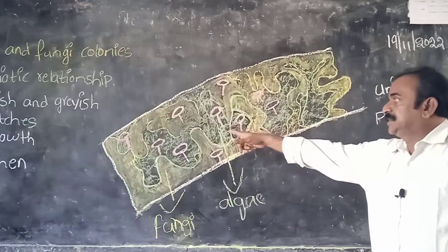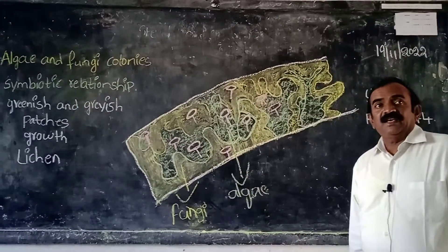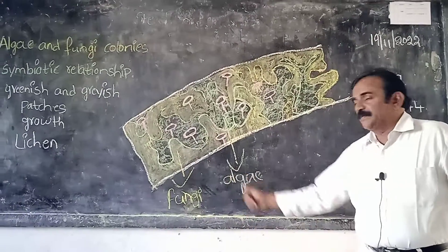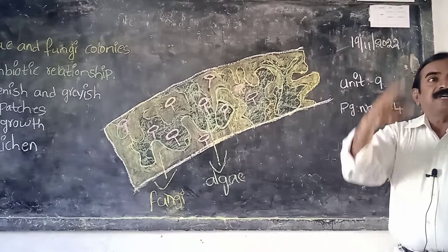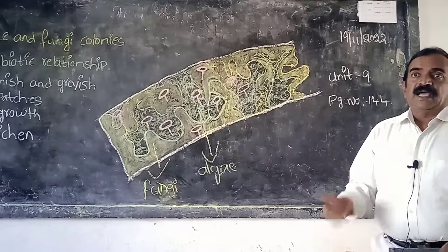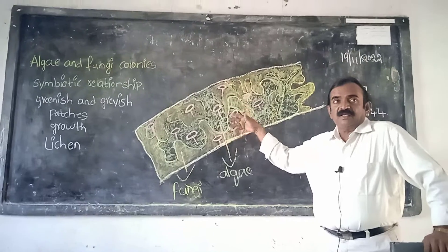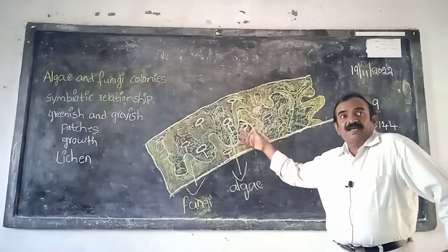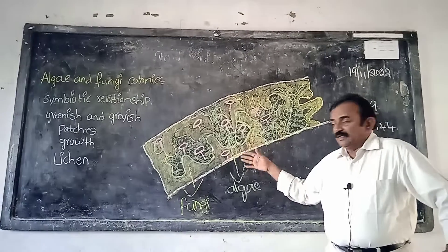Green color organisms which grow on the branch are called algae. You are observing two different types of organisms — they are algae and fungi. First, algae grow on the branches, then fungi also grow on the branches. Most of the algae are killed and destroyed, but few survive. Those surviving ones are called lichen.